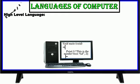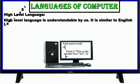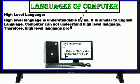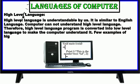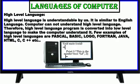The next language is high-level language. High-level language is understandable by us — it can be understood easily. It is similar to the English language. The computer cannot understand high-level language directly; therefore, a high-level language program is converted into low-level language to make the computer understand it. This conversion is done through a translator. Few examples of high-level language are Pascal, BASIC, Logo, FORTRAN, Java, HTML, C, C++, etc.